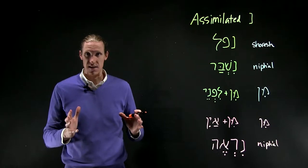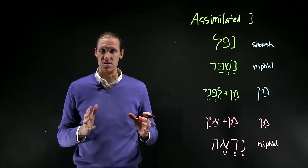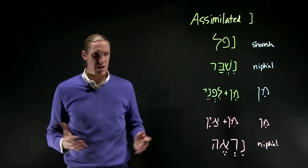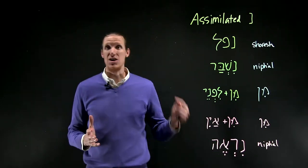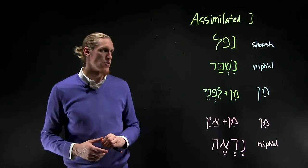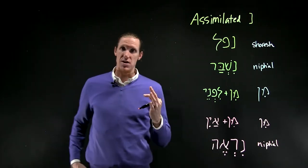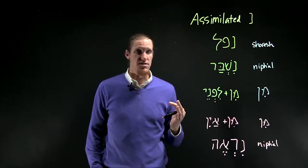The first trace that the noon leaves when it disappears is that it assimilates into the following root letter, or it puts a dagesh forte in the next root letter. It does that in three different occasions.